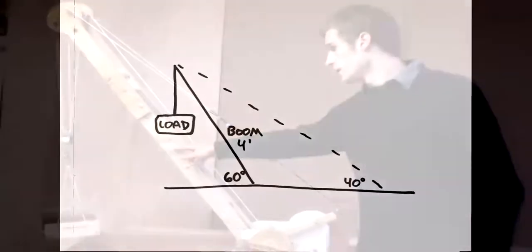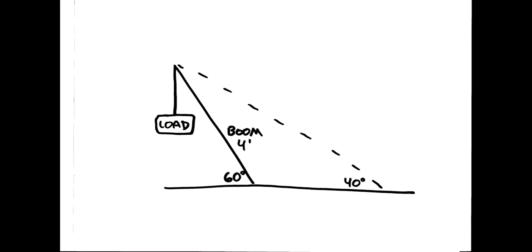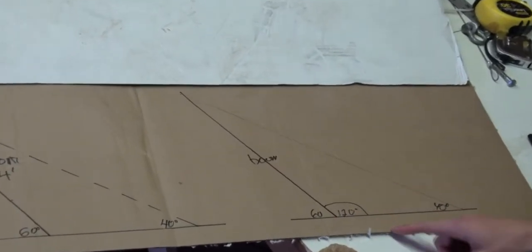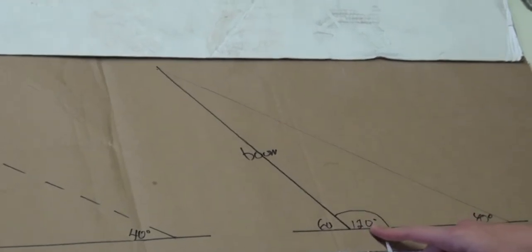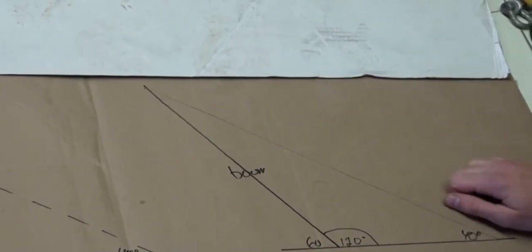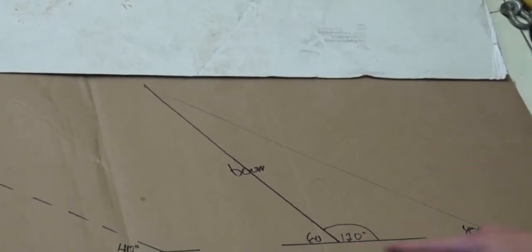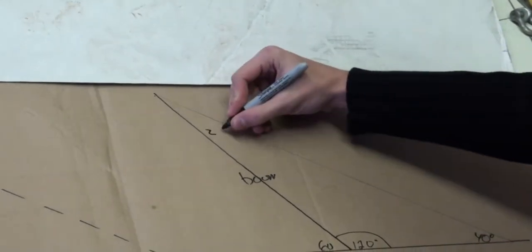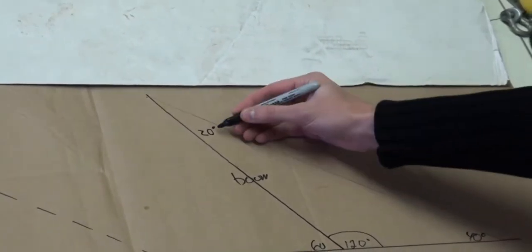The boom is at a 60 degree angle, and the boom line is at a 40 degree angle. In a straight line, there's a total of 180 degrees. We know this is 60, so this must be 120. Every triangle has 180 degrees total. 120 and 40 is 160, which means this must be 20 degrees.